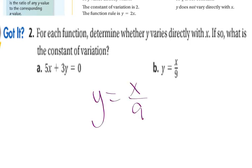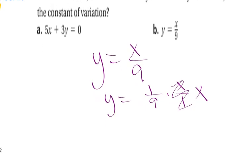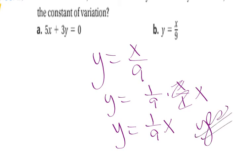The next one, y equals x over 9. Well, that's the same thing as saying y equals 1 over 9 times x over 1. And x over 1 is just x. So, that's like saying y equals 1 over 9 times x. So, yes, this is a direct variation. And my k value is equal to 1 over 9.